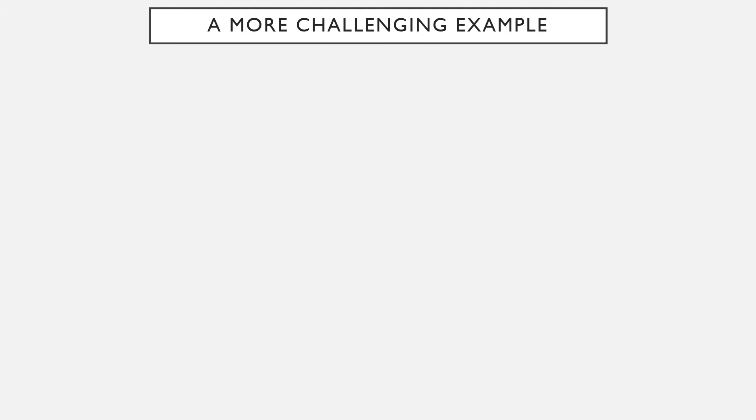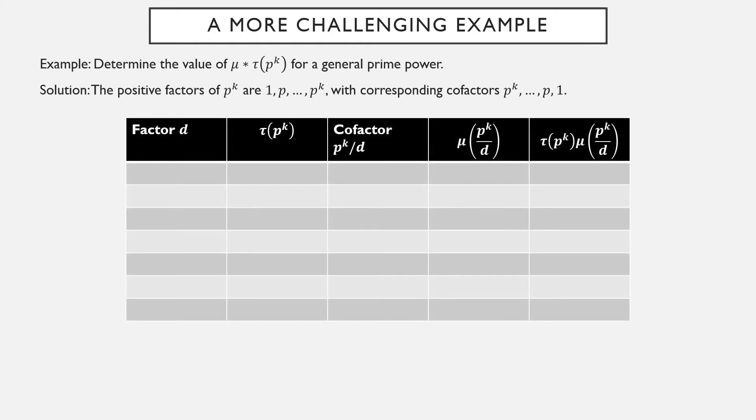Now we're going to take a look at a bit more challenging of an example. Let's compute the value of mu star tau of p^k. Mu is that Möbius function, tau is the number of positive factors function, and p is a general prime number. We don't specify which one, and k is any power of it. Well, the positive factors of p^k are fairly easy to list out. This is a nice convenience. They're simply 1, p, p², p³, all the way up to p^k. The corresponding cofactors would be p^k over that number, so p^k over 1 would just be p^k. p^k over p is p^(k-1). We simply count down powers until we get to p and 1 and finish there.